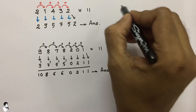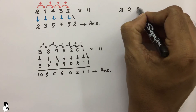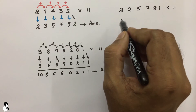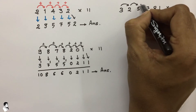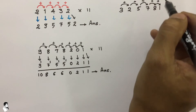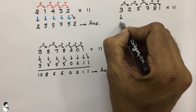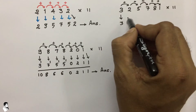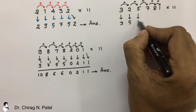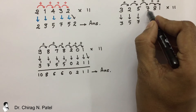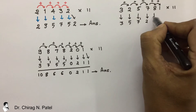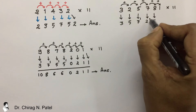Now try another one: 325781 multiplied by 11. We do the summation of each value with its next value. Write the first value as it is, then 3 plus 2 is 5, next 2 plus 5 is 7, then 5 plus 7 is 12, so write 2 here and 1 carries over.